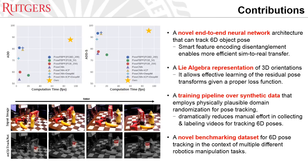Our contributions can be summarized as follows. We developed a novel neural network architecture that can track 6D object pose, where a smart feature encoding disentanglement technique enables more efficient domain transfer, and a Lie algebra representation of 3D orientations allows effective learning of the residual pose transform given the proper loss function. We also propose a training pipeline over synthetic data, which enables training purely on synthetic data that generalizes well to real-world data, dramatically reducing manual efforts in collecting and labeling videos. Finally, we also developed a novel benchmarking dataset for 6D-pose tracking in the context of multiple different robotic manipulation tasks.